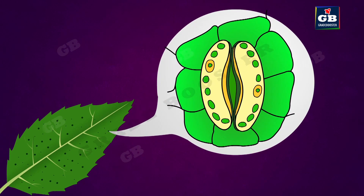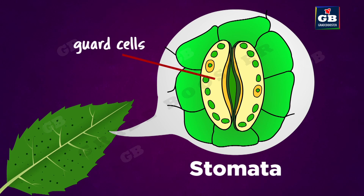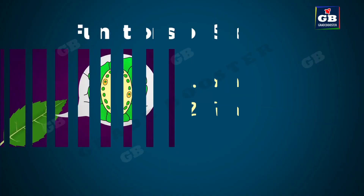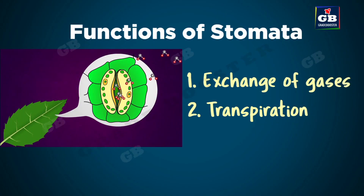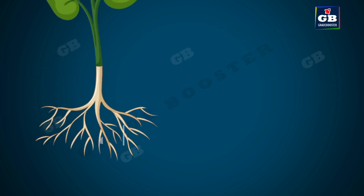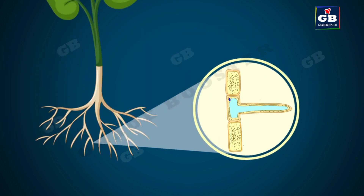The epidermis present on the leaf has small pores called stomata, and each stoma is protected by a pair of kidney-shaped guard cells. Stomata have two functions: they are essential for exchange of gases, and they help in the process of transpiration.